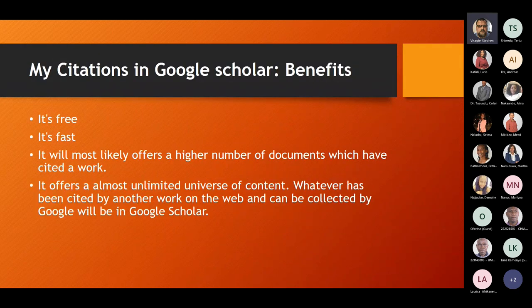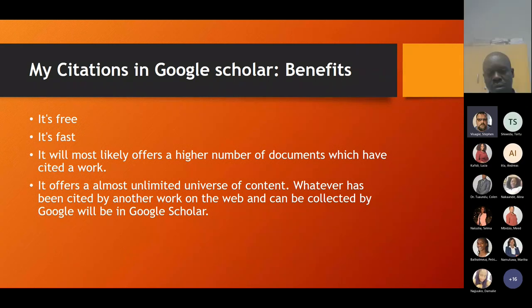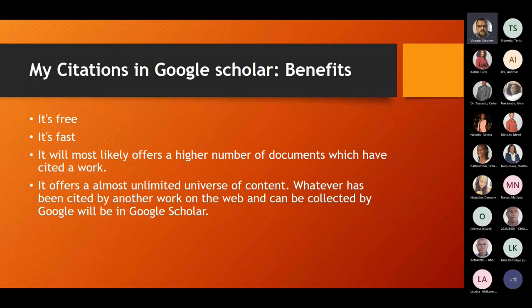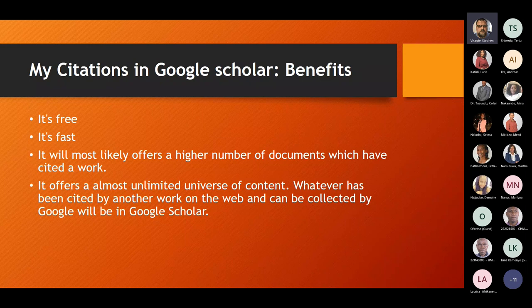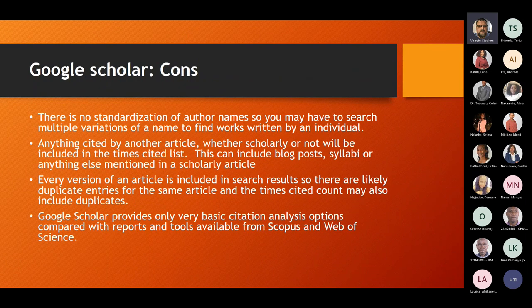Google Scholar My Citations benefits: it's free, fast, and will likely offer a higher number of documents citing your work, since it picks up journals not indexed by Scopus or Web of Science. It offers an almost unlimited universe of content — anything cited by another work on the web can be collected by Google Scholar, whether it's a book, blog, or other source, not just peer-reviewed journal articles. However, there is no standardization of author names, so if your name has changed or you've used different initials, it may not pick up all your items.